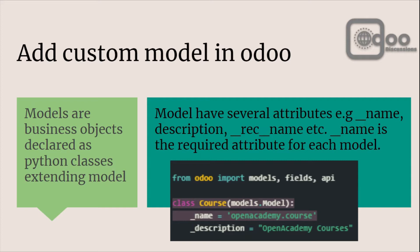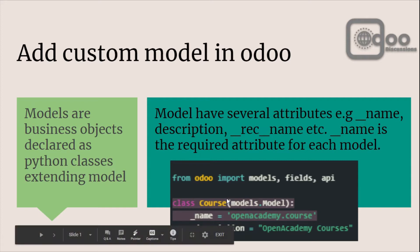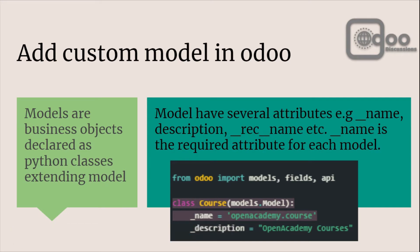A model has several attributes like the name of the model. In the screenshot below we can see the name of the model is 'open_academy.course'. Description is one attribute, and rake name is also one attribute which will be shown to other users inside relational fields. Name is the required attribute for each model — without a name you cannot define a custom model.